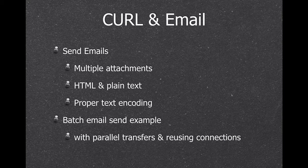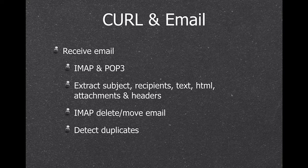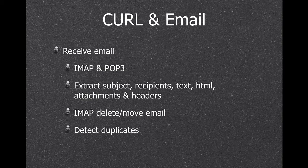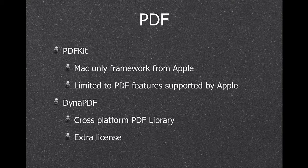We can send emails with multiple attachments, HTML and plain text, including inline graphics. We do correct text encoding so Chinese or Japanese characters appear correctly on the receiving side, and we have a batch email example for sending newsletters quickly. We can also receive emails — you can set up a mailbox where scripts fetch the first email, process it, and delete it. You can parse subject, recipients, text, HTML, attachments, and headers. Attachments can go into a container or be saved to a file.